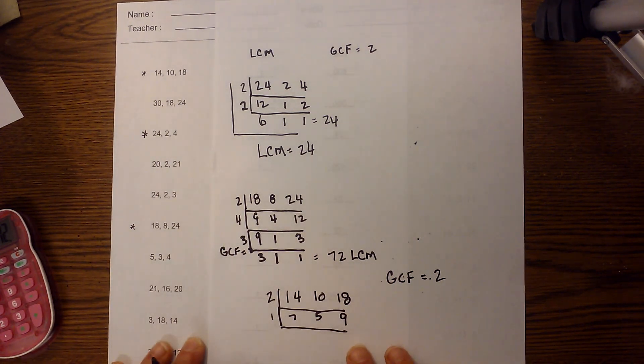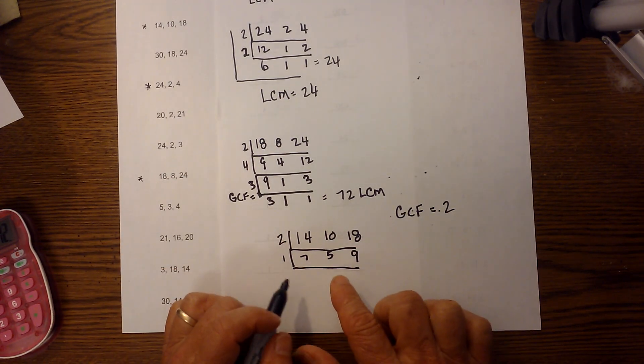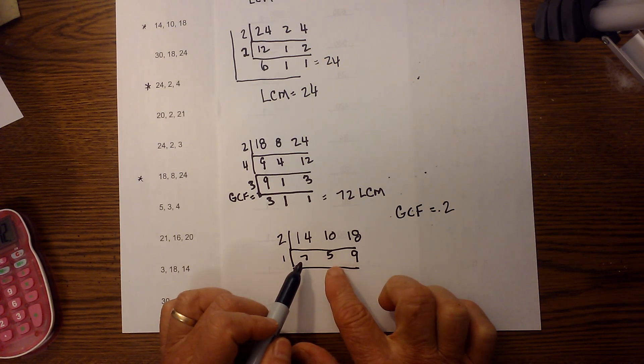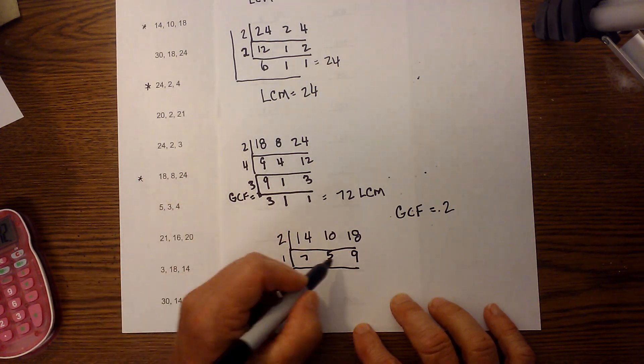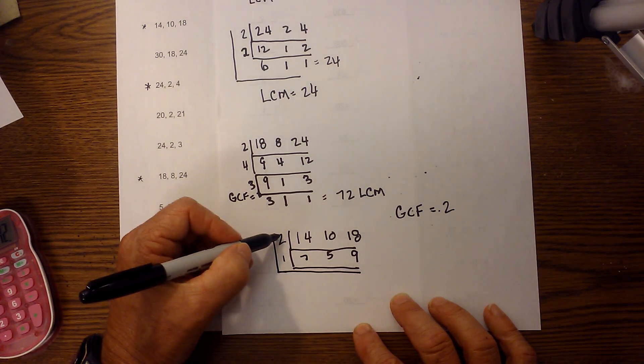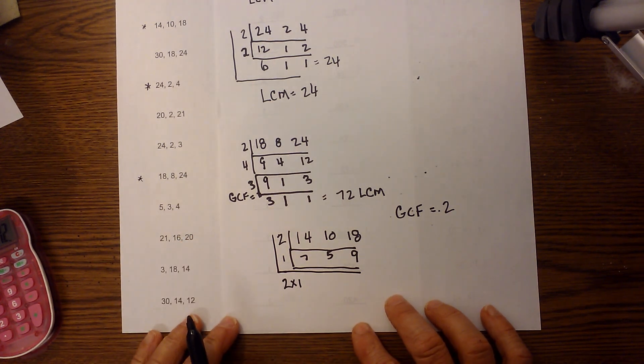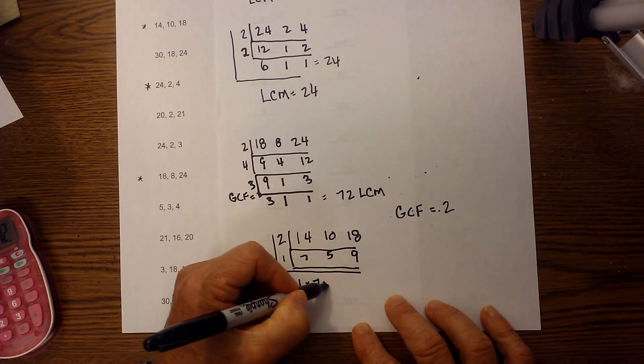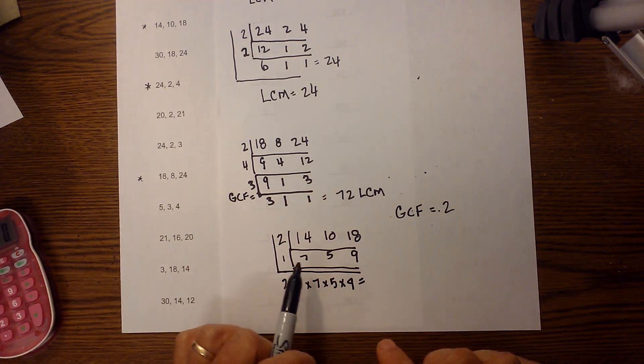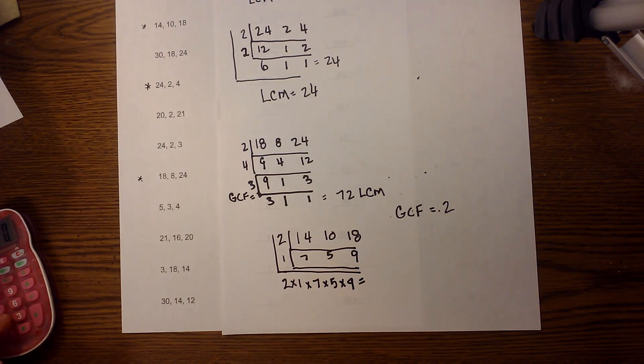Now let's find the LCM. At this point there are no pairs that will divide into each other, so we multiply the L. We're going to multiply 2 times 1, and I'm going to write this out this time. We have 2 times 1 times 7 times 5 times 9, and then we'll start multiplying. The reason is there were no pairs that would divide into each other. It's a little bit trickier with three numbers, so be careful of that.